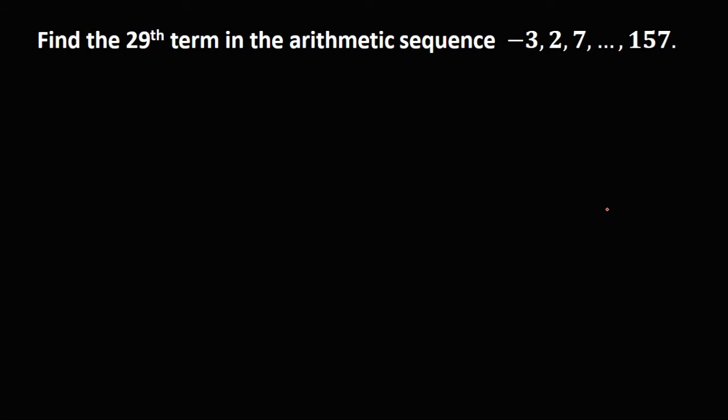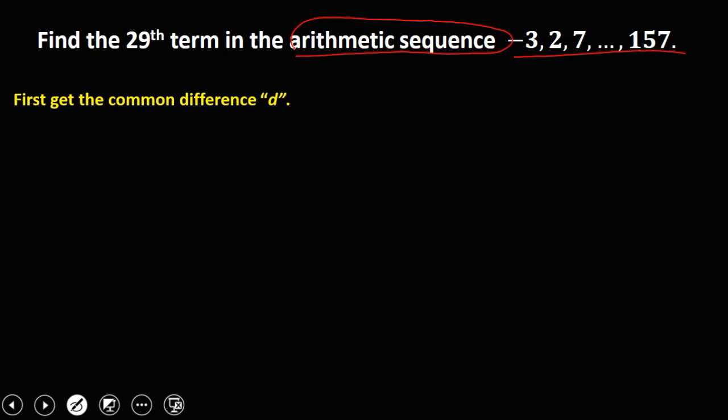Okay, so let's have this problem. Find the 29th term in this arithmetic sequence. Now, since this problem is an arithmetic sequence, we need to find first the common difference.